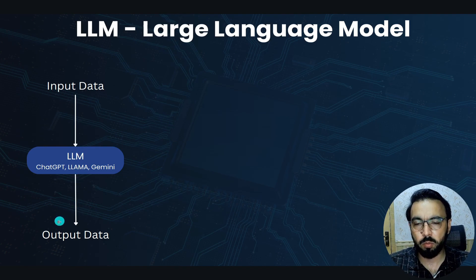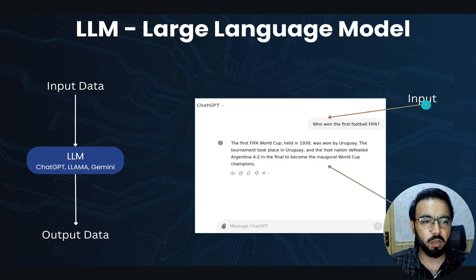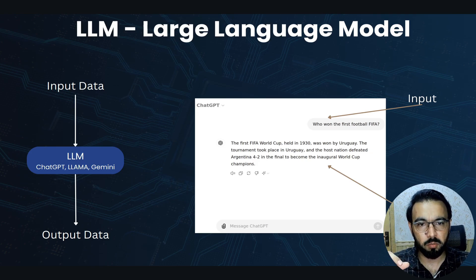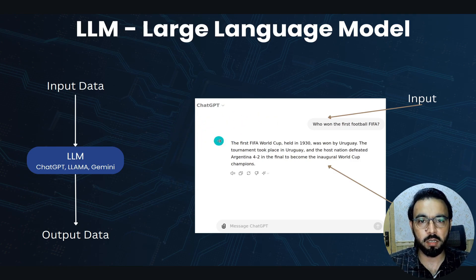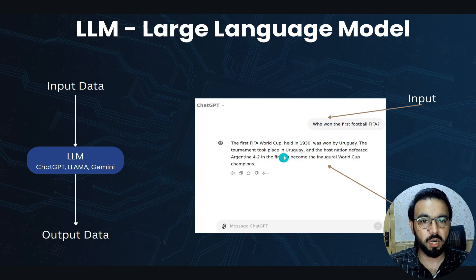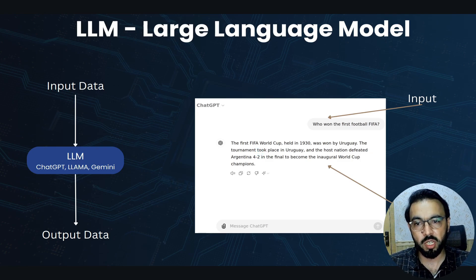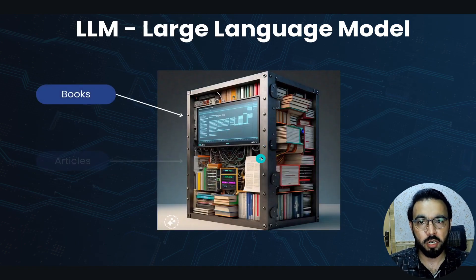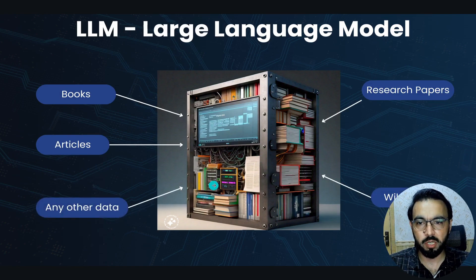The output data could be text, image, video, or audio. For example, in ChatGPT I'm giving the input 'Who won the first football FIFA?' and based on its training data it predicts the output. This is how a large language model works — true for Gemini, Llama, and any other LLM. You give input (text, image, video, or audio) and it generates output depending on how the model was trained and what training data was provided.